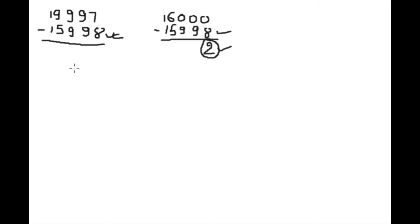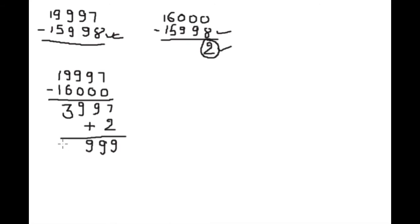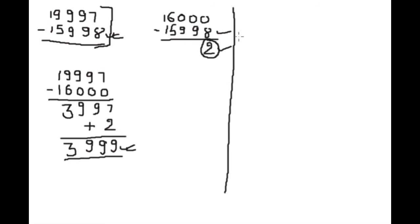Since sixteen thousand is two extra, we first subtract nineteen thousand nine hundred ninety-seven from sixteen thousand — the nearest whole number. Because we subtracted two extra, we will add two back to get the correct answer. This is our answer for this equation.